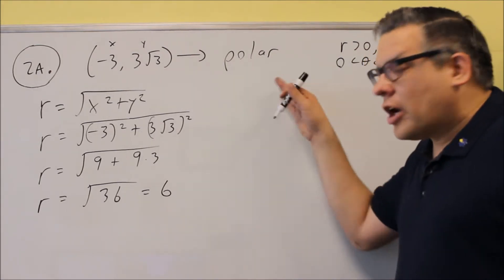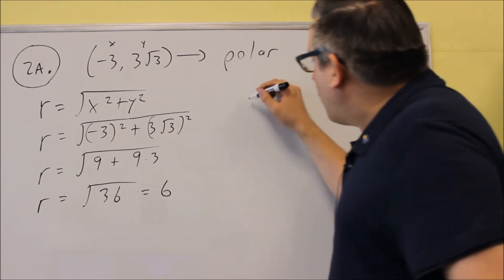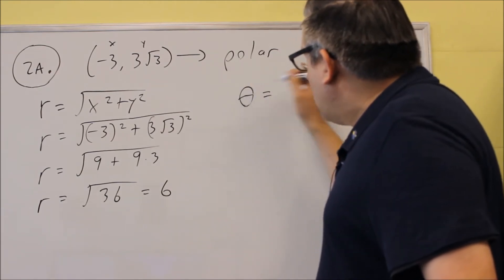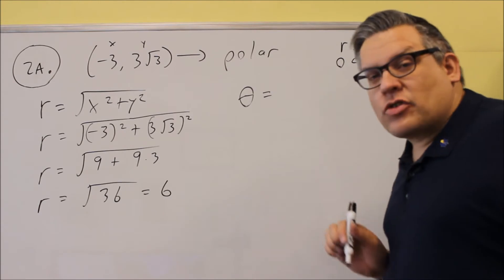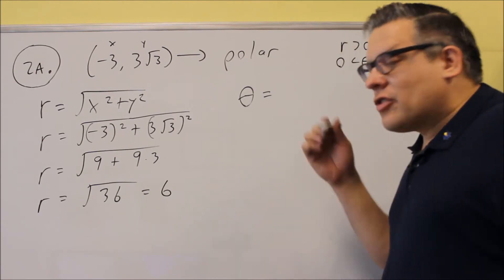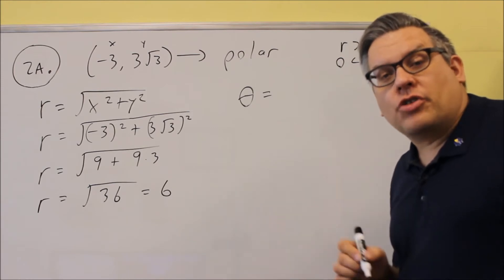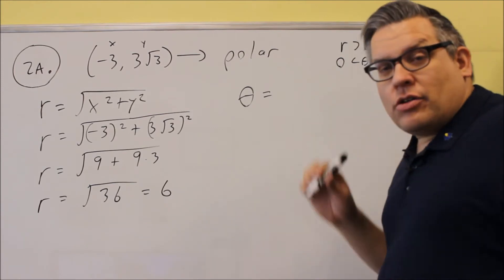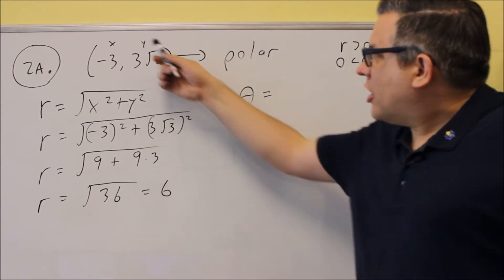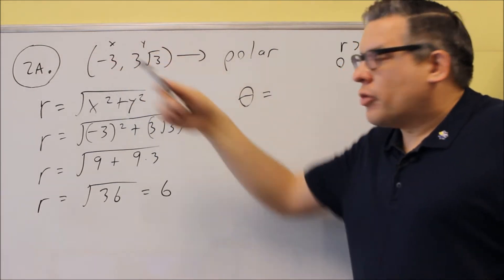Now next, I have to figure out what the theta is. For theta, we have two formulas we talked about in class that involve inverse tangent. One is inverse tangent of Y over X. One of them you have to add a pi, and the other one you don't.